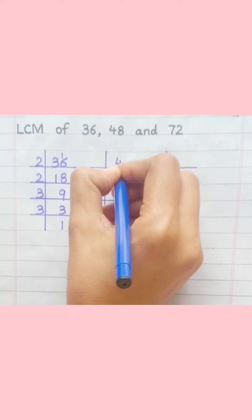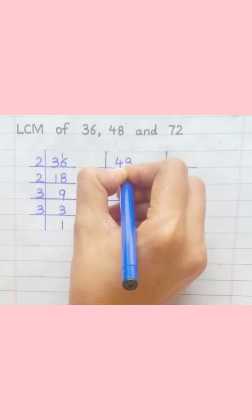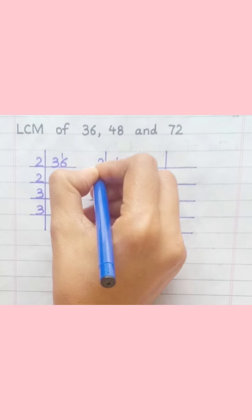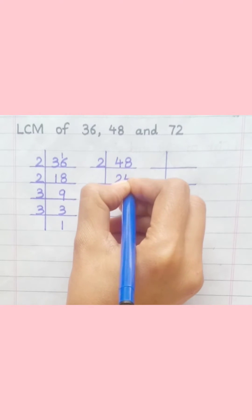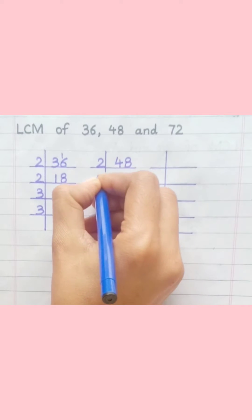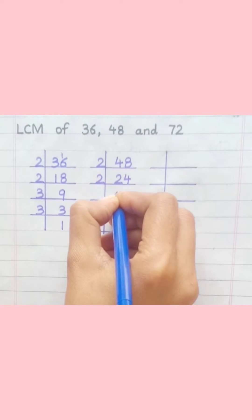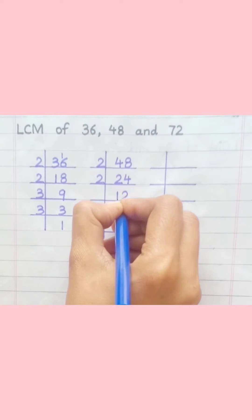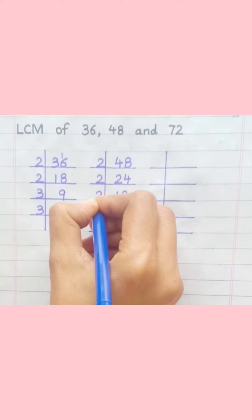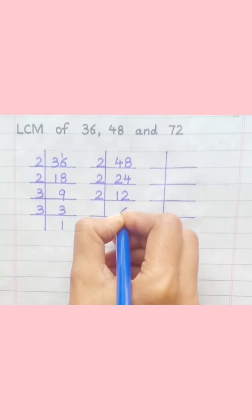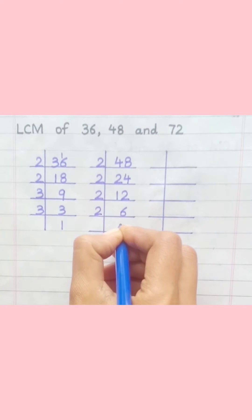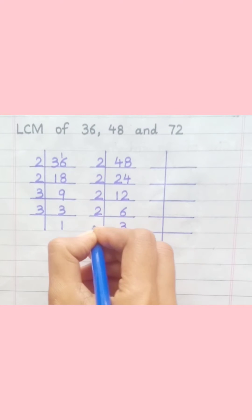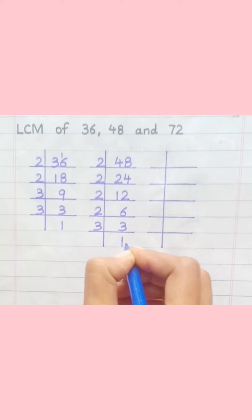48: 2 2s are 4, 2 4s are 8, 2 1s are 2, 2 2s are 4, 2 6s are 12, 2 3s are 6, 3 1s are 3.